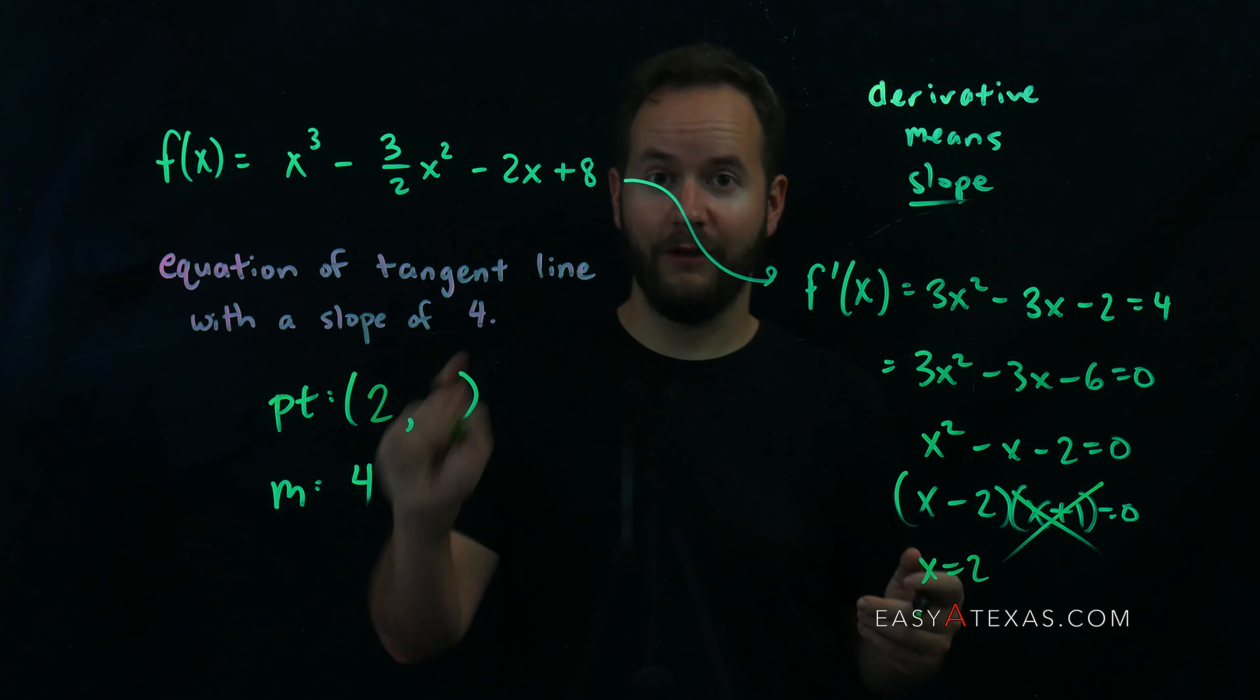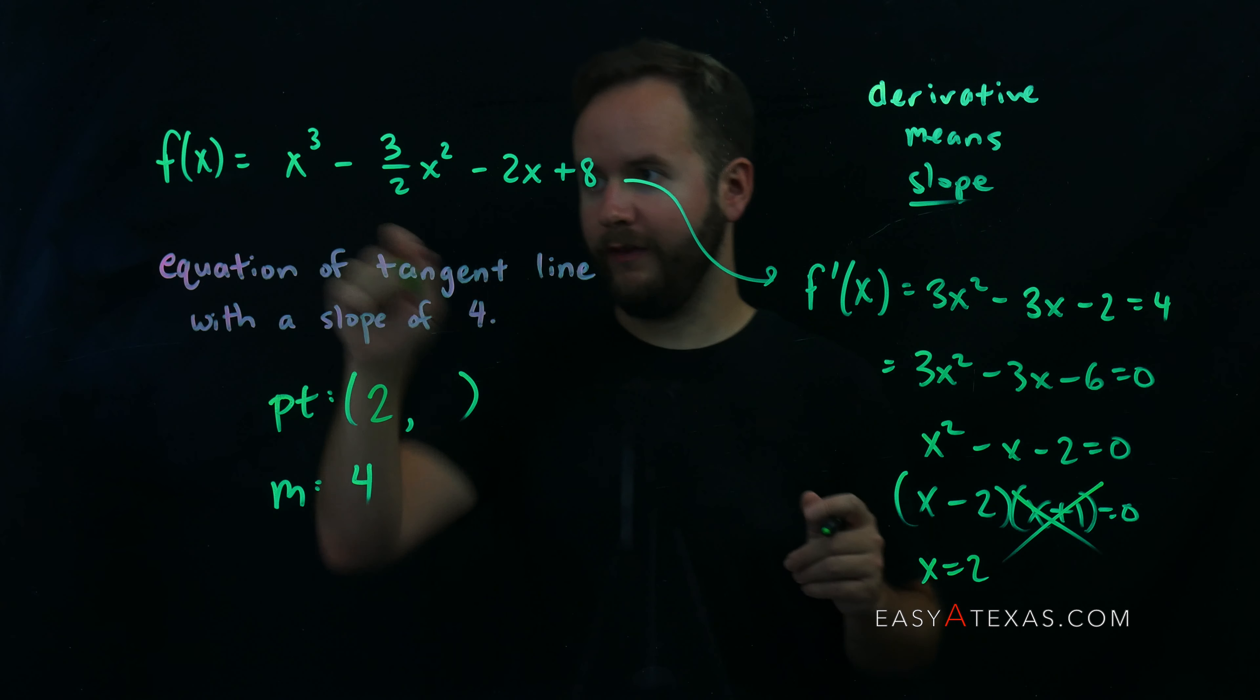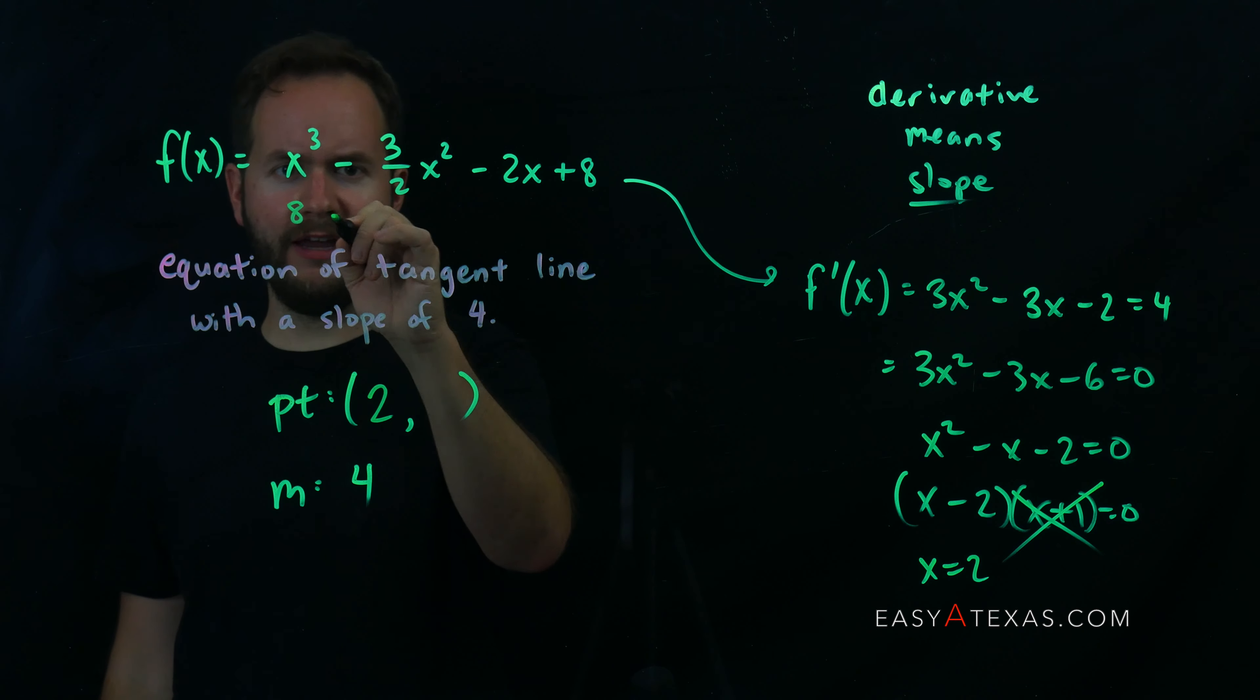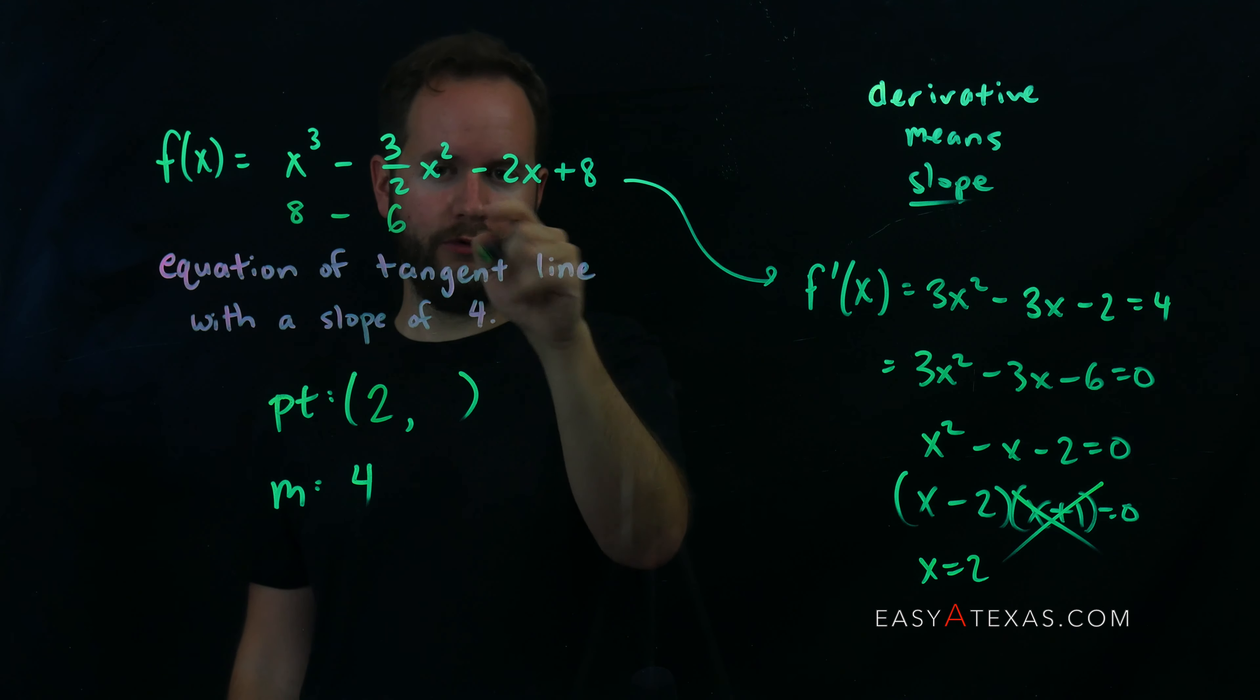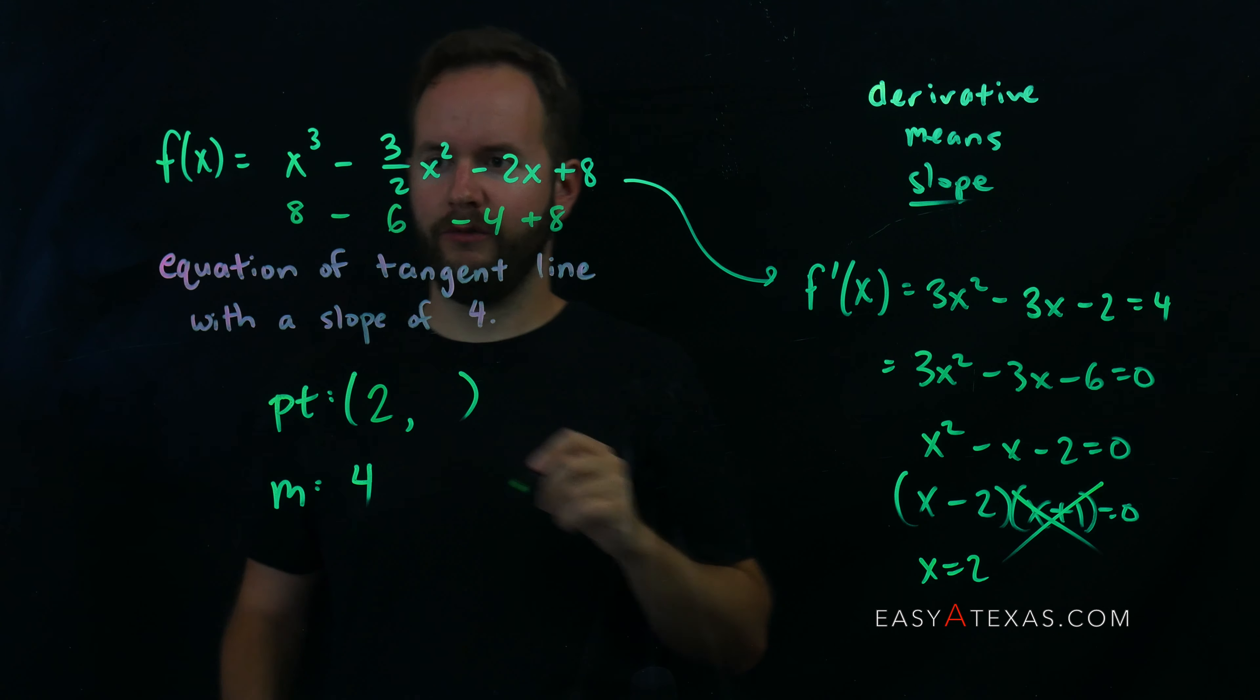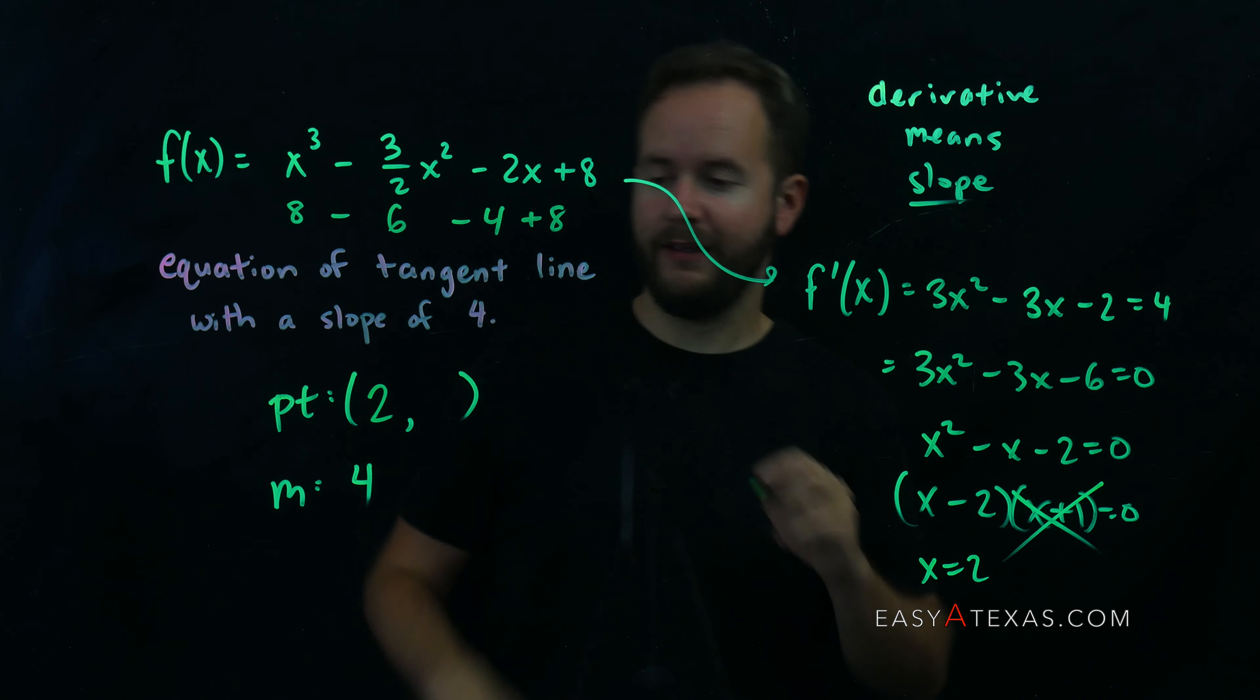Now, the last thing for me to do is take this x value of x equals 2 and plug it back into the original function to get my corresponding y value. That's going to be 2 cubed is 8, 2 squared is 4 times 3 halves is 6, 2 times 2 is 4, and then we have plus 8. So we have 8 minus 6 is 2, minus 4 is negative 2, plus 8 is 6.